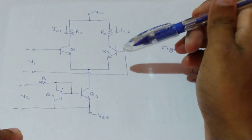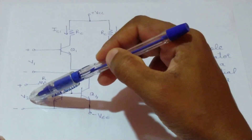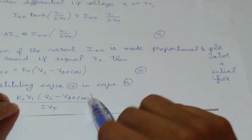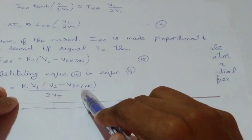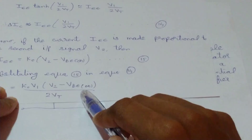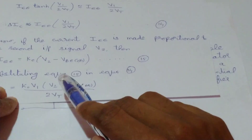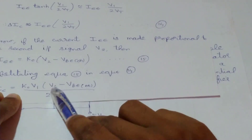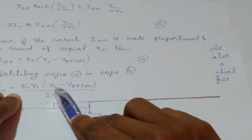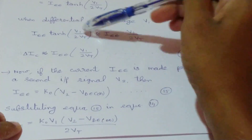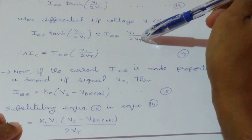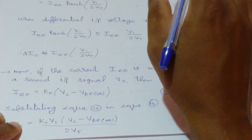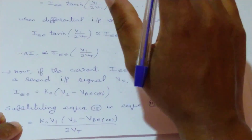However, this multiplier circuit has several limitations. First, V2 is offset by VBE(on), as seen in the equation where we have V2 − VBE(on). Second, V2 must always be positive, which results in only two-quadrant multiplier operation — V1 can be positive or negative but V2 cannot be negative. Third, the approximation tanh(V1/2VT) ≈ V1/2VT means the output is not exact. The first two limitations can be overcome by using a Gilbert multiplier cell, to be discussed in the next class.